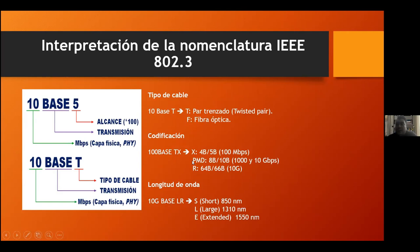Posteriormente, conforme se va desarrollando el estándar 802.3, encontramos que si encontramos una X después de la T, significa la codificación. Cuando encontramos una X, utiliza código 4B/5B, que ya se utiliza para redes en transmisión de 100 megabits. PMD, que es por frecuencia de longitud de onda, utiliza codificación 8B/10B, regularmente para medios en fibra óptica a 1000 megabits por segundo. O simplemente cuando encontramos una R, que es cuando estamos transmitiendo a 10 gigas, utiliza codificación 64B/66B.